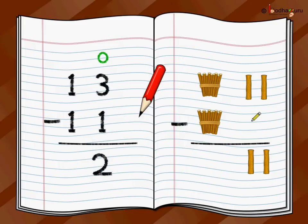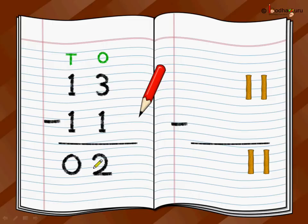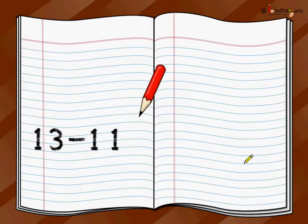Then you move to tens position. You have a bundle of 10 sticks, and one bundle of 10 sticks you want to remove from it. From one bundle of 10 sticks you want to remove one full bundle — how many will be left? You will be left with nothing. So same way, at the tens position, one minus one is equal to zero. So thirteen minus eleven is equal to zero two, or two.